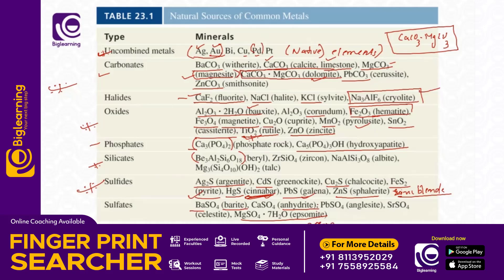Now this is what we have learned: carbonates, oxides, sulfides — all are very important ore forms. These are examples of the chemical forms of ores. Sulfides and carbonates are key categories.